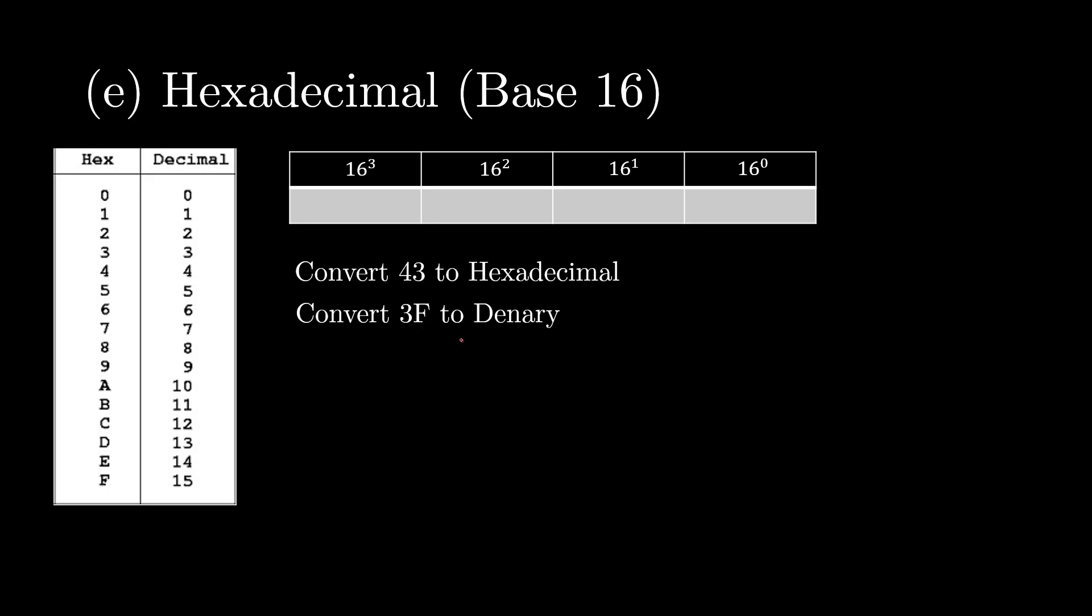If we want to convert 3F to denary, well, the 3 here represents the 16 column, right? So we need to do 3 lots of 16, which is just going to be 48. And then we need to add on F amounts of 16 to the power of 0, and F represents 15, so we just need to add on 15. And that's going to be 63.